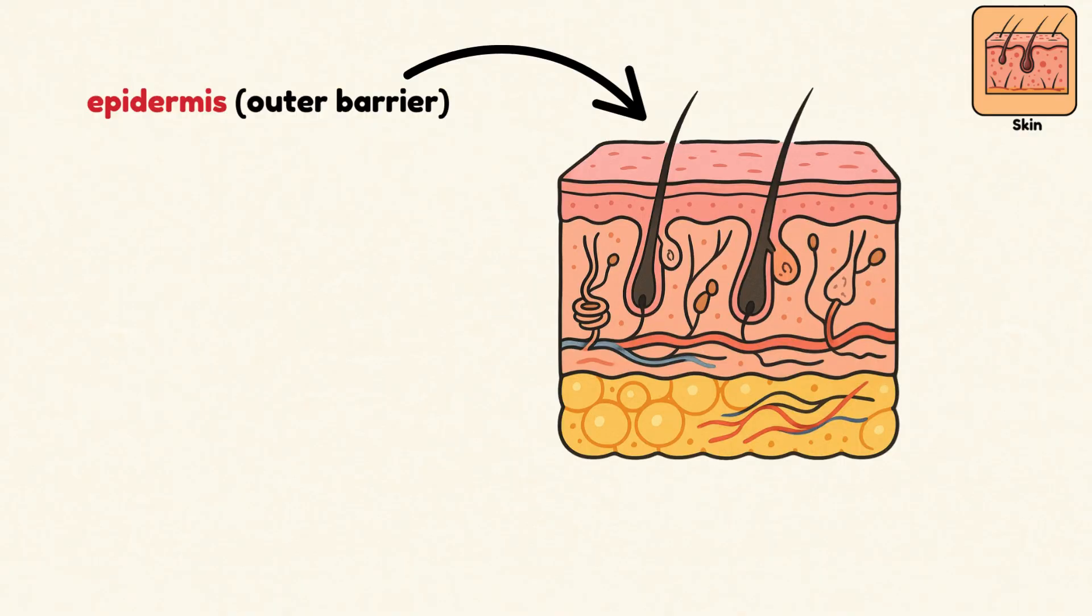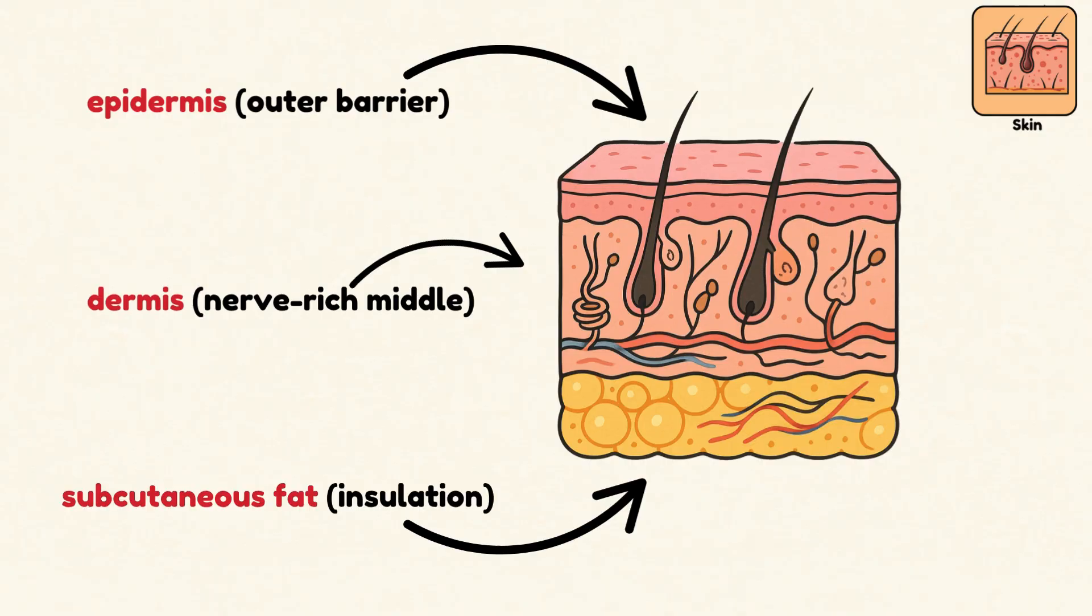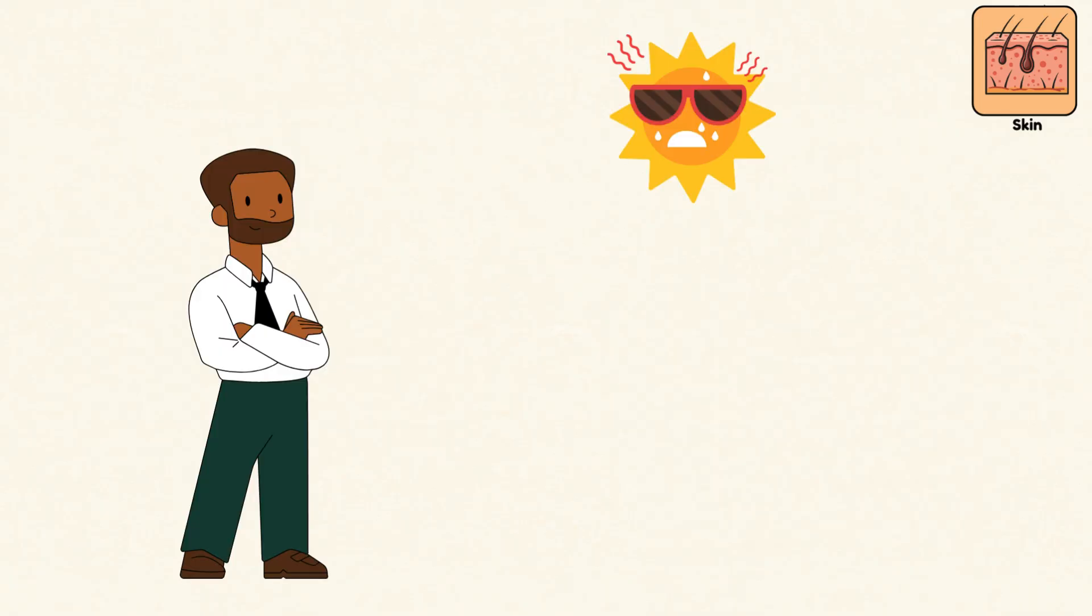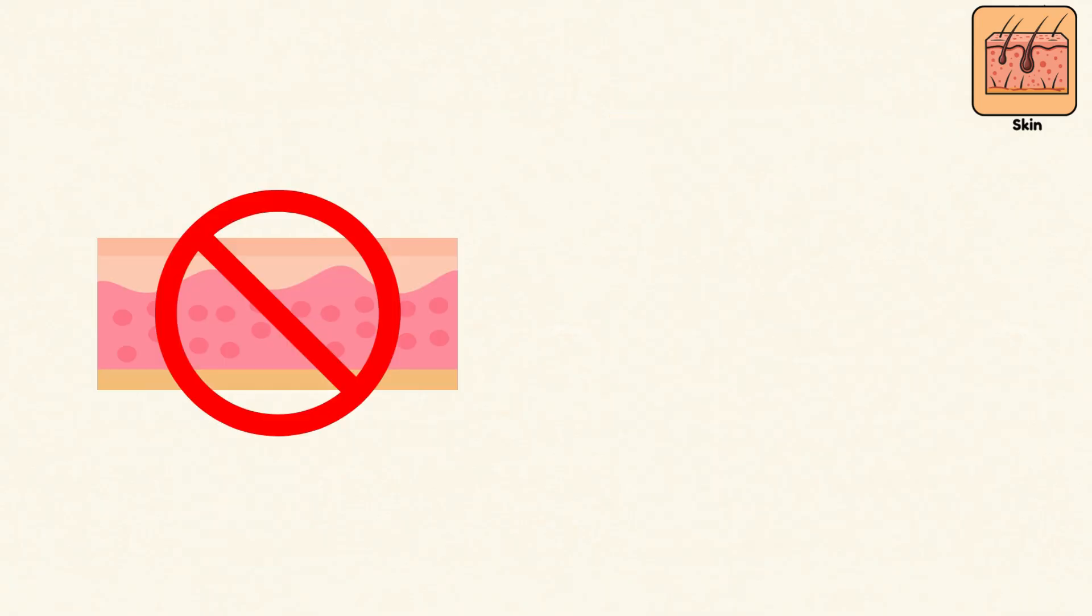Skin has three layers: the epidermis, outer barrier; dermis, nerve-rich middle; and subcutaneous fat, insulation. Melanin, your natural sunscreen, gives skin its color, with more of it in sunnier climates. It's not just a surface, it's a shield.